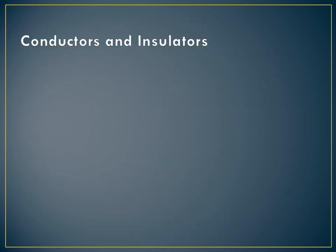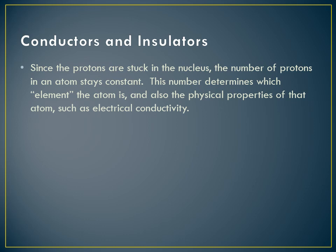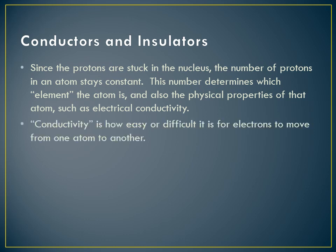So now that we understand a little bit about the subatomic particles that make up materials, I want to talk about a couple different types of materials that are really relevant in this unit, and these are called conductors and insulators. In general, no matter what kind of material we're talking about, the protons are stuck in the nucleus of the atom, and so that means it's going to stay constant. We're not pulling protons in or out or we're going to be changing the kind of atom or the element that we're talking about.